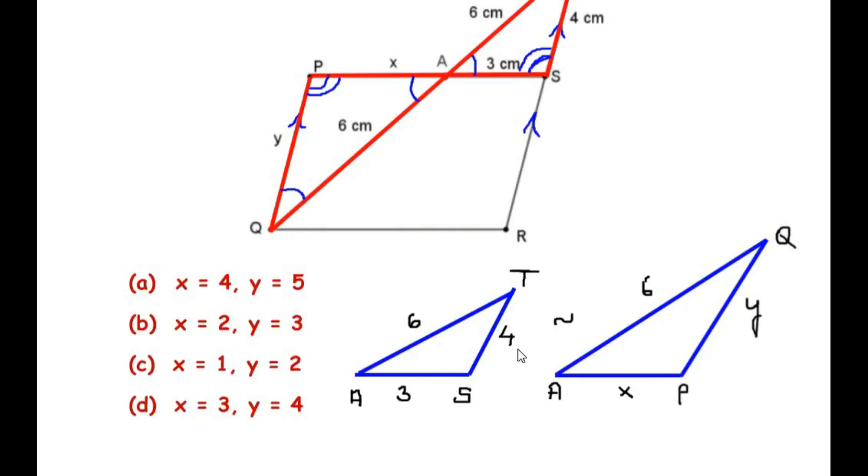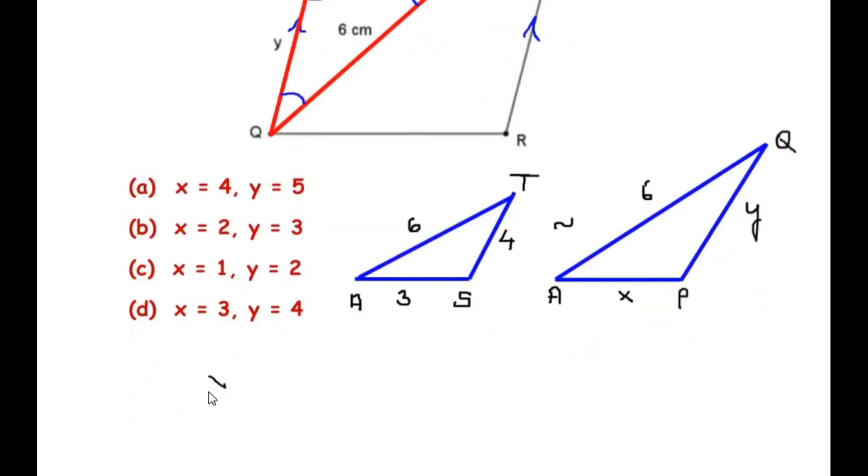Now for the similar triangles we know that the corresponding sides are going to be proportional. So here I'm going to take AP, so AP is x over its corresponding side is 3. So let me write here x over 3 is equal to, now I'm going to take AQ which is 6, and from the other triangle its corresponding side is AT which is nothing but 6. So 6 and 6 divides each other and we get 1. And taking 3 on the other side of the equal to sign, 3 multiplies with 1 giving you x equal to 3. So this is 3 centimeter.